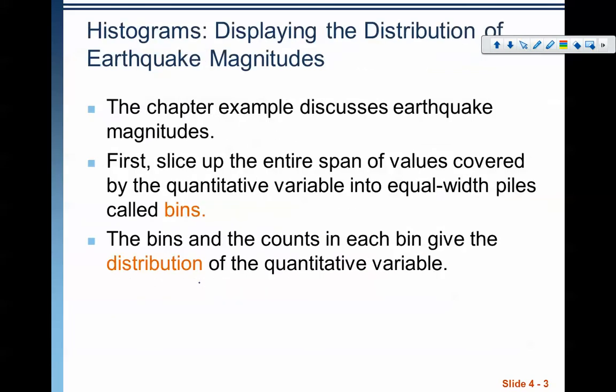The first one, and probably the most popular that you end up seeing, is called a histogram. What a histogram does is it displays that data in a sort of a continuous measure. In the chapter example from your book, you're looking at earthquake magnitudes. And the way that you start to create a histogram, they look similar to bar charts. The idea is that you're going to first create some bins.